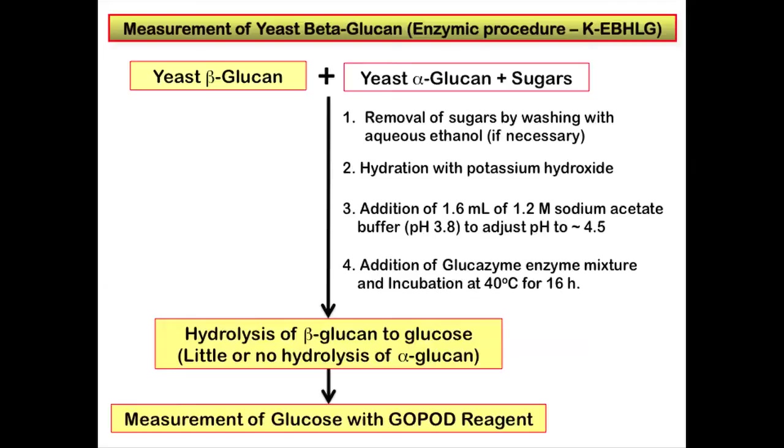The sample is then hydrated by stirring in cold potassium hydroxide solution. Following this, the solution is neutralized by adding 1.6 mL of 1.2 M sodium acetate buffer pH 3.8 to adjust the pH to approximately 4.5.